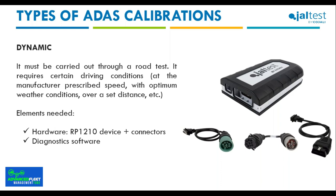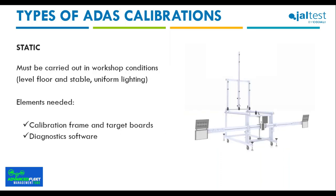For dynamic calibration, you will need an RP-1210 device with the right connectors — most likely the 9-pin connector, the 6-to-9-pin adapter, or the OBD2 connector — plus diagnostic software connected to the vehicle during the test. Static calibrations must be carried out in a specific workshop environment with a level, stable, well-lit floor. This type does not require a road test.